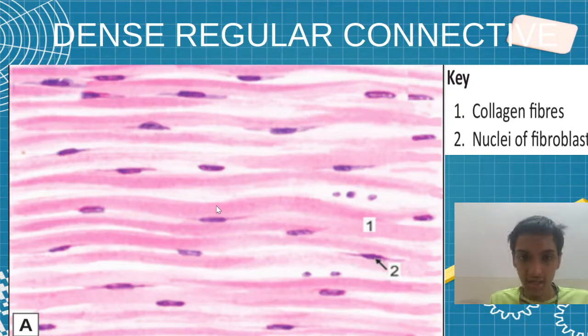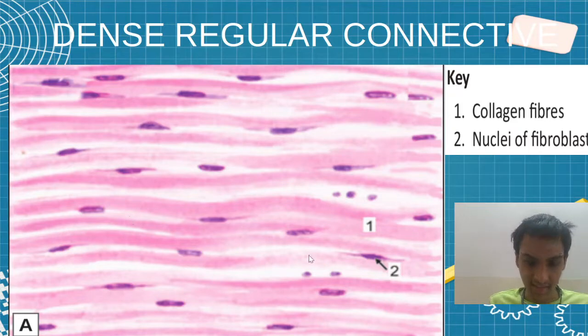So for dense regular connective tissue, just draw very thick straight lines like this. Wavy wavy lines, ok.